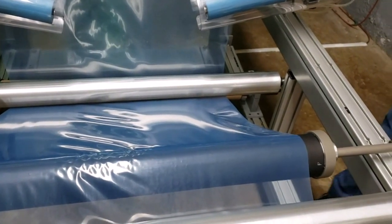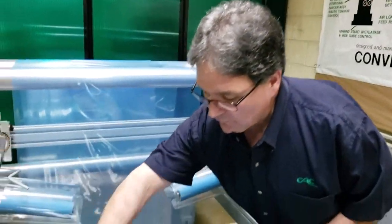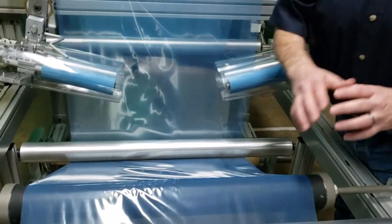What we're going to do is, I'm going to start up the machine. You're going to see wrinkles coming into the roll. And then on the output side of the roll, on this side of the roll, you'll see that the web will be completely flat.